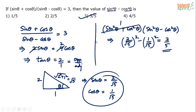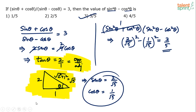The answer is 3/5, option 3. This technique is very important — when you know tanθ equals some value, construct a right-angled triangle and find the sides using Pythagoras. For example, if tanθ = 1/5, opposite = 1, adjacent = 5, hypotenuse = √26. This approach is very useful for solving many trigonometry problems.